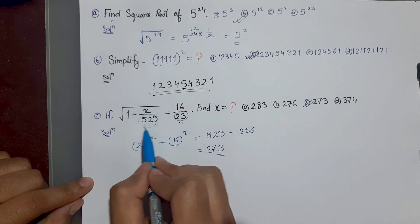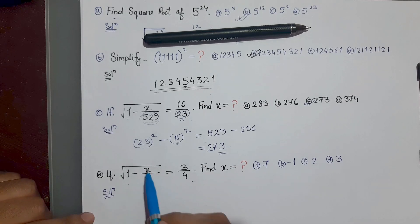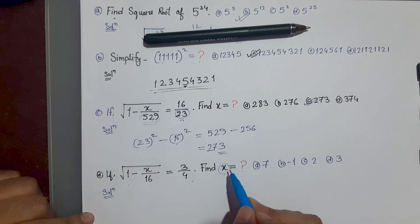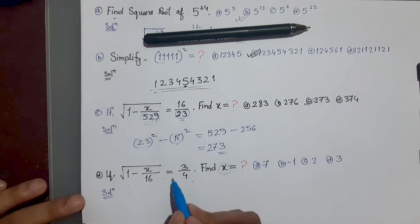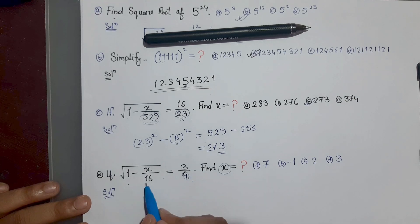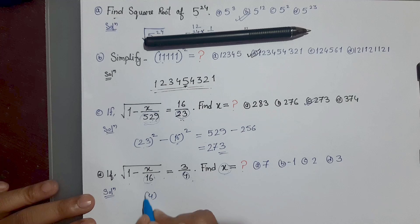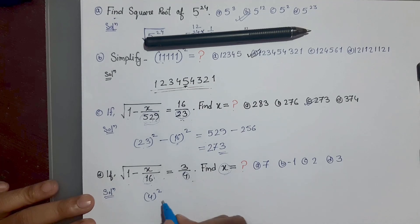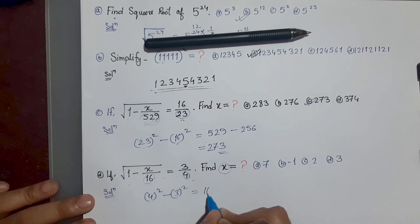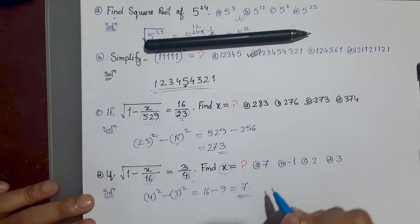Next question: root over (1 - x/16) = 3/4. We need to find the value of x. This question is the same type. First, check whether the denominator is a perfect square — 16 is 4². So directly: denominator squared minus numerator squared = 16 minus 9 = 7. The answer is 7, option A.